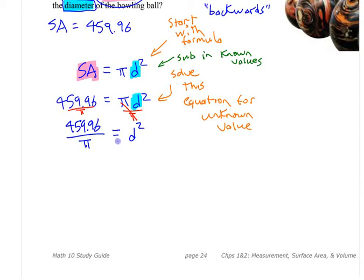And then if it says d squared is that number over here, you could actually divide that and get what number it is, but I'm just going to leave it until the end so I don't have to worry about it until the end. If it says d squared over here, how am I going to get the d by itself? How do I undo this squaring? Yeah, square root, right? So d is the square root of 459.96 divided by pi.